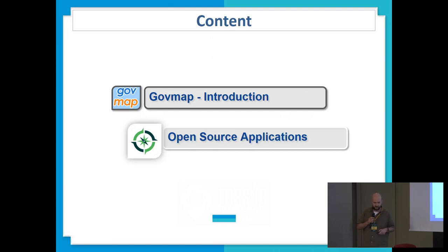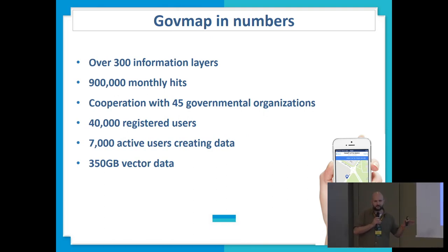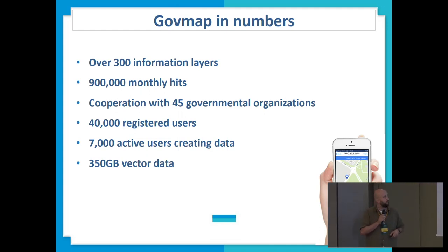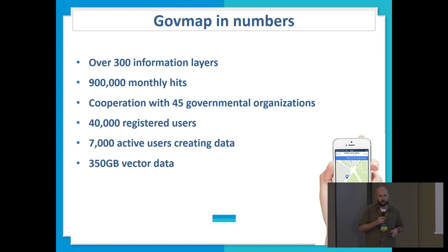Some of it already exists, some of it will happen quite soon, I hope. We have over 310 public layers of information, twice as many non-public layers just for organizations' own use. We have almost 1 million monthly hits, which is quite huge for Israel. We have cooperation with 45 governmental organizations, 40,000 registered users, 7,000 of them active users creating and collaborating data. Our database is 350 gigabytes of vector data and probably around 100 gigabytes of cache raster data in addition.